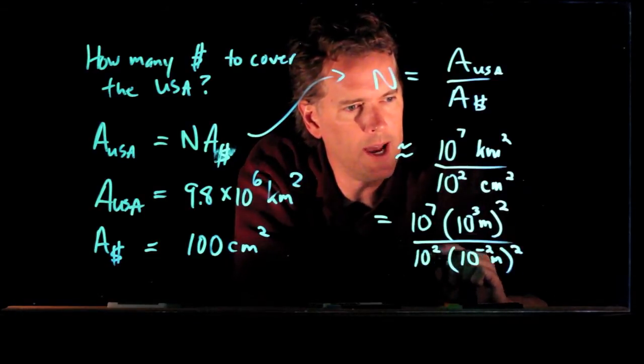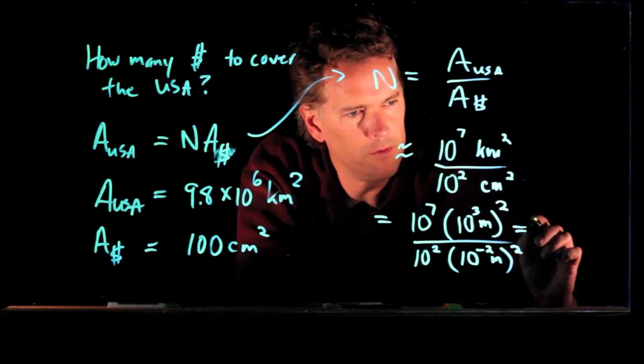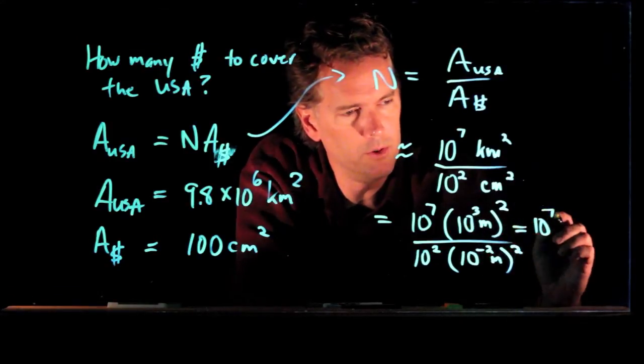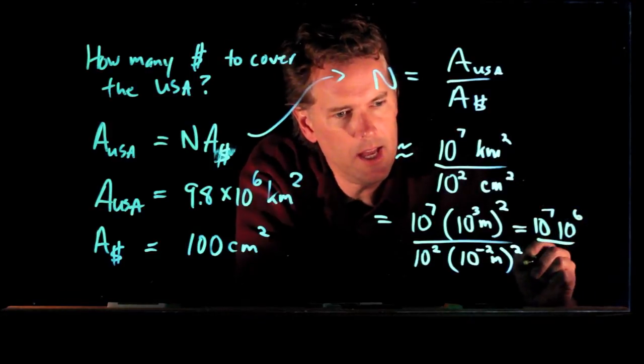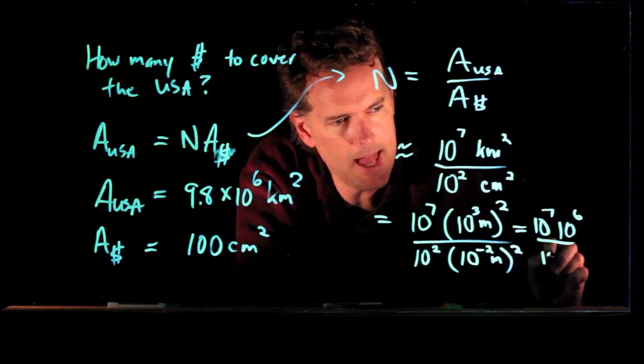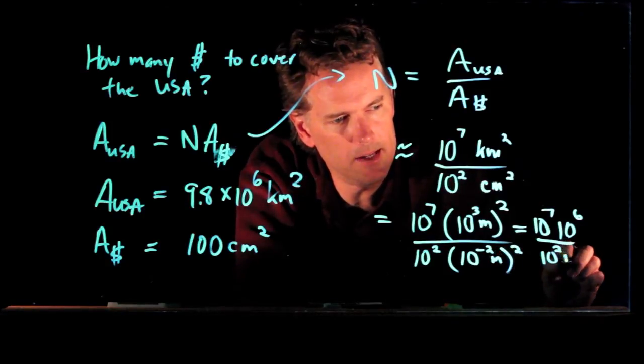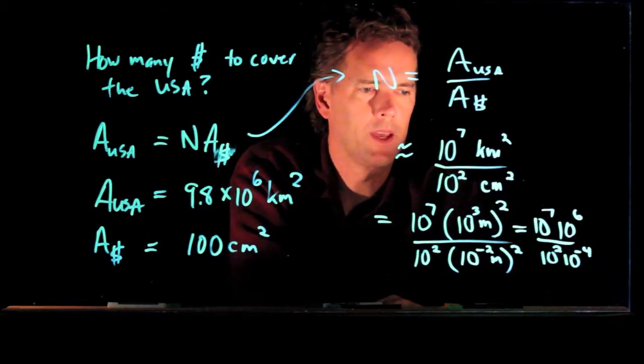And so now look what happens. We've got a bunch of numbers that we need to multiply. We've got 10 to the 7, and we've got 10 to the 3, which is squared, so that's a 10 to the 6. And down in the bottom, we have a 10 to the 2, but then we have a 10 to the minus 2 squared, which becomes a 10 to the minus 4.